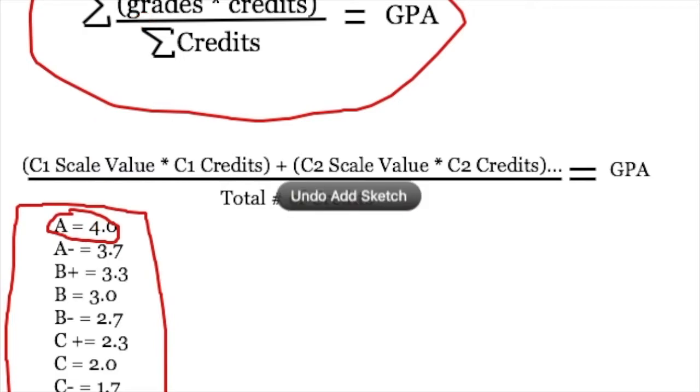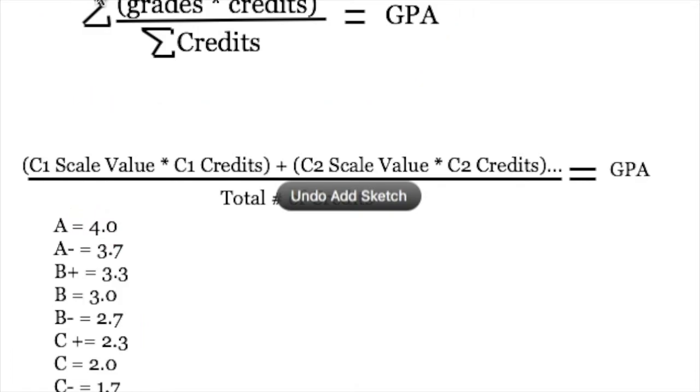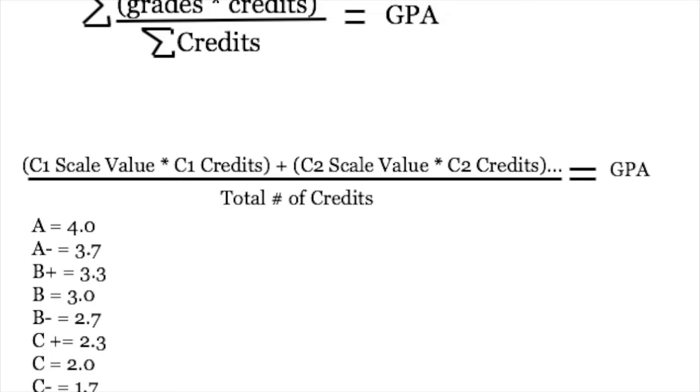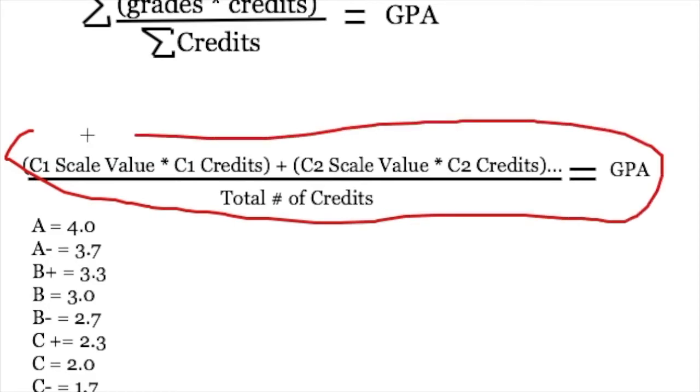So like I said, both formulas are the same thing. It's just that the difference is just how you write it. And so now I'm going to cover the second formula, which is my way of writing it. I just think it's helpful. So basically what you do is you take your scale value for course one and you multiply it by the number of credits for course one.